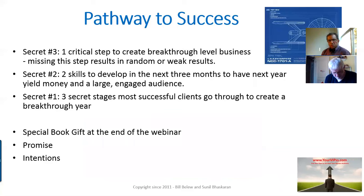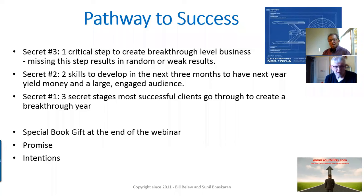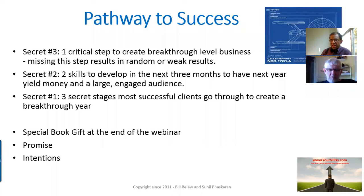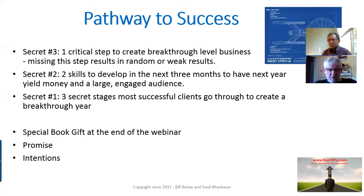The pathway to success: we're going to cover three secrets today. A lot of people don't really know these, or if they do, it's more like a 'duh' — not an aha moment, but 'I knew that but never did anything about it.' Secret number three is the one critical step to create breakthrough-level business — missing this step often results in failure. Secret number two is two skills to develop in the next three months that are imperative; without them, you probably won't sell as effectively.